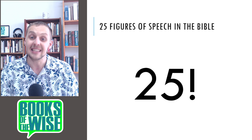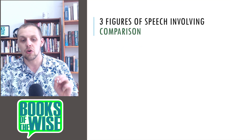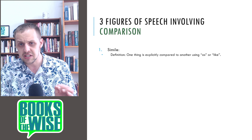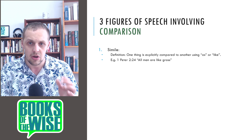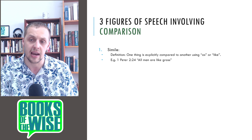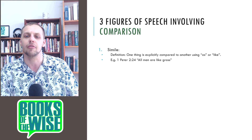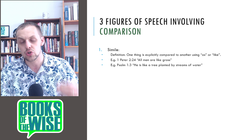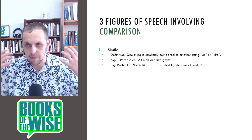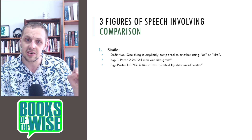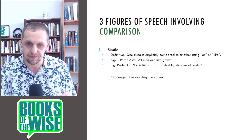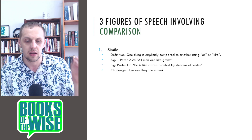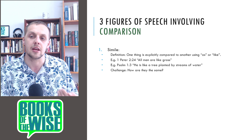Now let's look at the 25 types of figures of speech in the Bible. First, there are three figures of speech involving comparison. The first is a simile — the most common one. A simile is when one thing is explicitly compared to another using as or like. For example, 1 Peter 2:24: all men are like grass. Psalm 1:3: the righteous person is like a tree planted by streams of water. The challenge for the interpreter is to ask how these two things are the same.